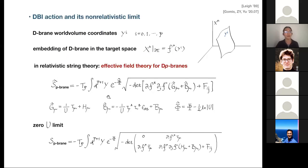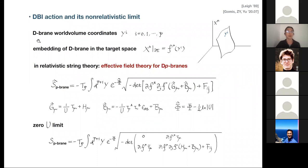DBI is short for Dirac-Born-Infeld, in relativistic string theory. Consider a D-brane configuration with a worldvolume of dimension p+1 — this is a Dp-brane. We denote the coordinates on the D-brane as y^i, where i goes from 0 to p. Note that even though I wrote i here, it includes a time direction index.